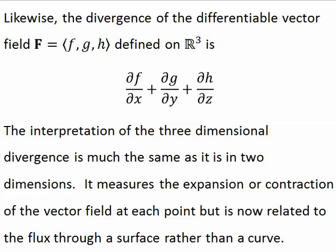Three-dimensional divergence is defined as f partial x plus g partial y plus h partial z. The interpretation of the three-dimensional divergence is much the same as it is in two dimensions. It measures the expansion or contraction of the vector field at each point, but is now related to the flux through a surface rather than a curve.